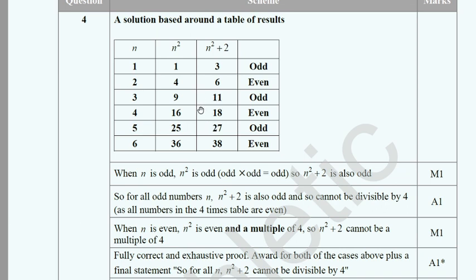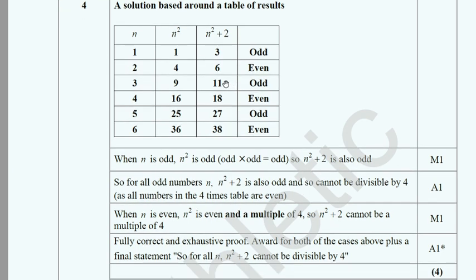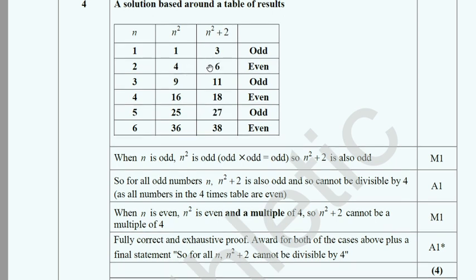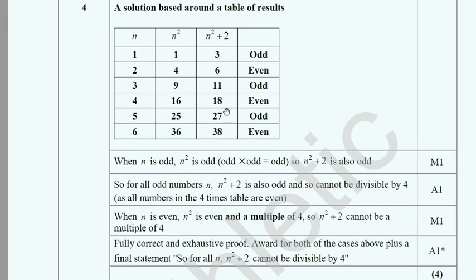Looking at even numbers: for n=2, n² + 2 = 6; for n=4, n² + 2 = 18. These are not divisible by 4. Although n² itself may be divisible by 4 for even n, adding 2 means the result is always 2 away from a multiple of 4, so n² + 2 is never divisible by 4. The values 6, 18, 38 confirm this for all cases.